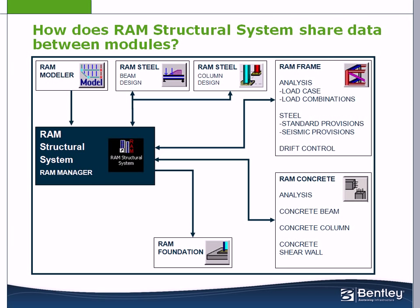Next we look at RAM Modeler. In RAM Modeler, all of the steel, concrete, and other material beams, columns, braces, and wall members of the model are defined. Members are able to be defined as gravity only or lateral frame members. Deck type, one-way versus two-way, and deck orientation will be defined. Also gravity dead, live, storage, roof, and snow loads can also be defined. Loads are able to be placed as area, line, and point loads in the model.